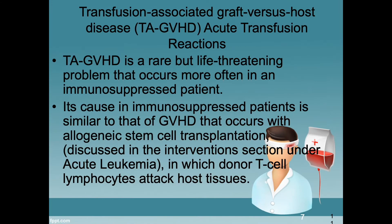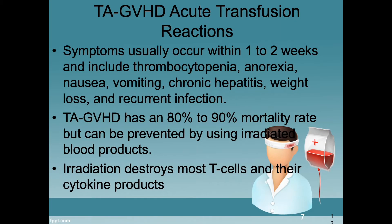Transfusion-associated graft-versus-host disease, or TA-GVHD, is a rare but life-threatening problem that occurs most often in an immunosuppressed patient. Its cause is similar to GVHD in that it occurs with allogeneic stem cell transplantation, in which donor T cell leukocytes attack host tissues. Symptoms usually occur within one to two weeks and include thrombocytopenia, anorexia, nausea, vomiting, chronic hepatitis, weight loss, and recurrent infection. TA-GVHD has an 80 to 90% mortality rate, but can be prevented by using irradiated blood products. The irradiation destroys most T cells and their cytokine products.